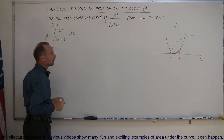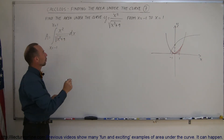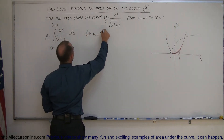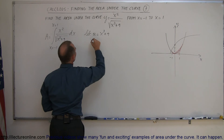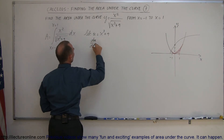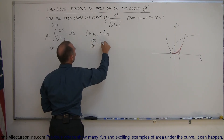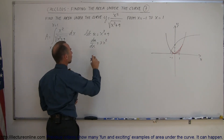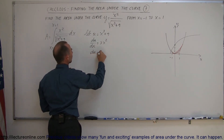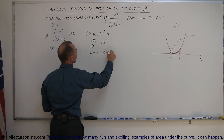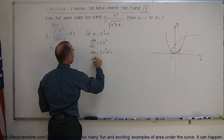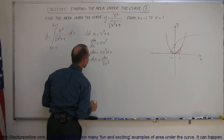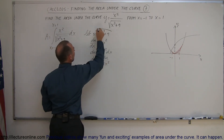I'm going to let u equal x cubed plus 9. Then du/dx equals 3x squared, so du equals 3x squared dx, or equivalently dx equals du divided by 3x squared.